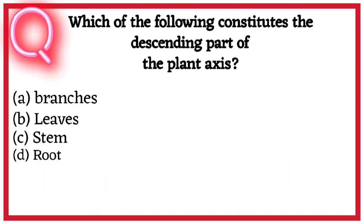First question. Which of the following constitutes the descending part of the plant axis? A. Branches, B. Leaves, C. Stem, D. Root. So correct answer hai option D. Root.